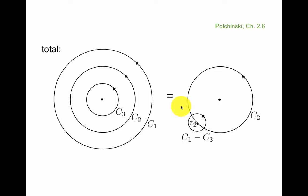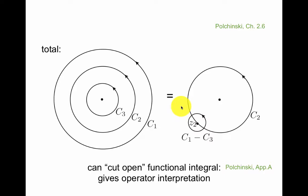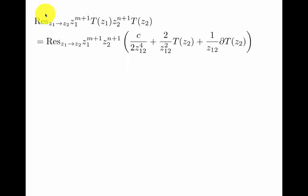But all these tricks with the contours should correspond to something in the operator version of the theory. And in fact, this is made explicit in Polchinski's appendix. You can cut open the functional integral, you can slice it at some radius, which corresponds to time. So this is a time ordering. And then you get the operator interpretation in terms of time order products of operators. So this is a calculation we have to do now.